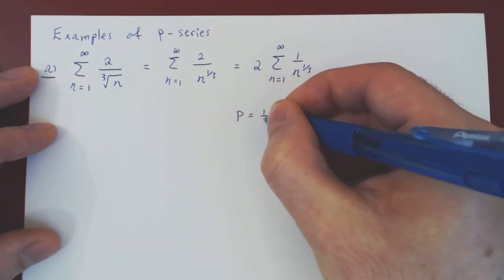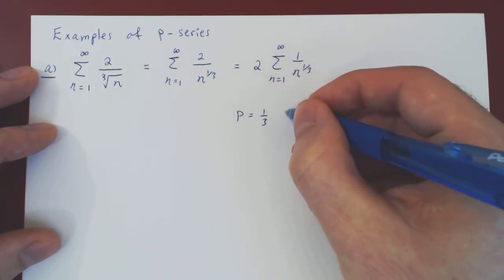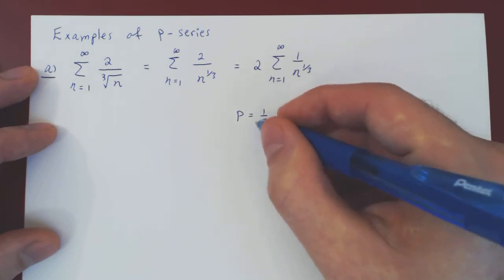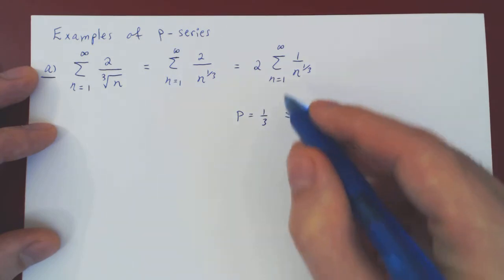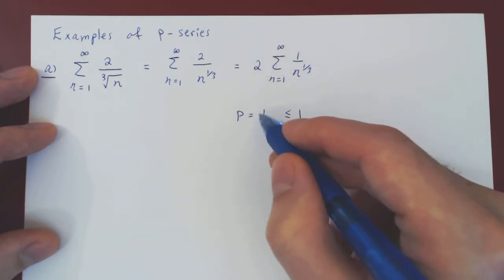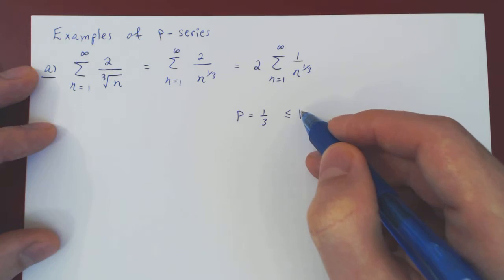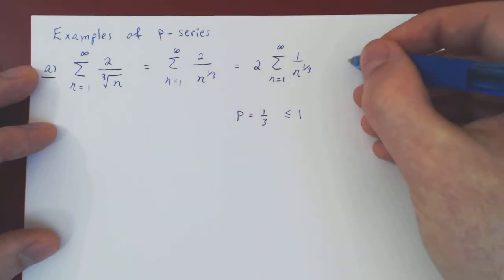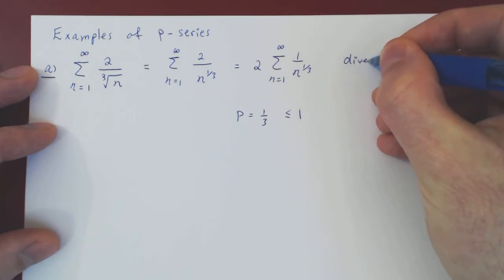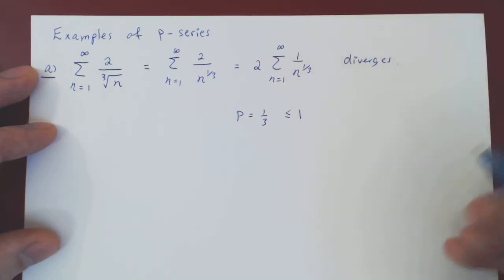p is 1 over 3, and this is not larger than 1. This is less than or equal to 1. But a p-series can only converge if p is strictly larger than 1. As this is not the case, this series diverges. And we're done.